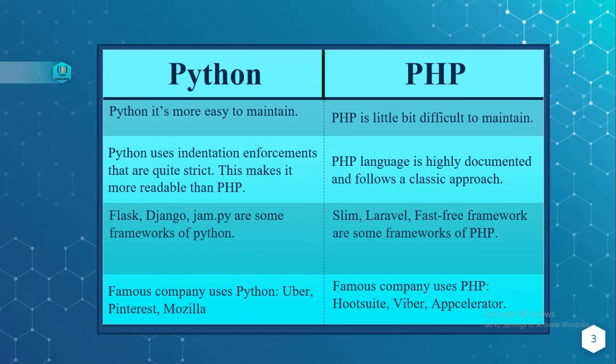Now let's come to the last difference. Famous companies that use Python are Uber, Pinterest, and Mozilla Firefox. And when it comes to real-world examples for PHP, famous companies that use PHP are Hootsuite, Viber, Pencil, and many more.